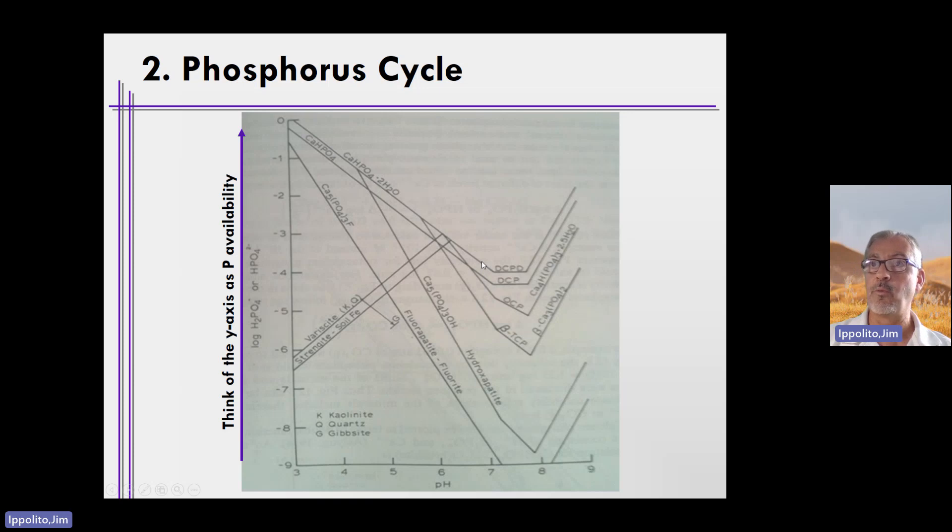This mineral is relatively soluble. According to the y-axis, it has a relatively high P solubility. So what does it do? It doesn't like to be present in soils, so it'll react and form DCP, and DCP is still relatively soluble, and so it'll reform, dissolve and re-precipitate, and form OCP, and it'll dissolve and re-precipitate and form beta-TCP, and it'll dissolve and re-precipitate and form hydroxyapatite, which can dissolve and re-precipitate as fluorapatite. The minerals at the very bottom of this figure are highly insoluble according to the y-axis.